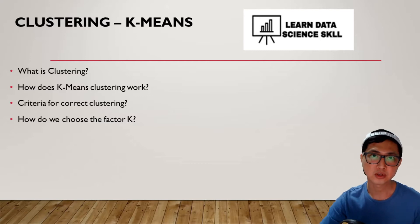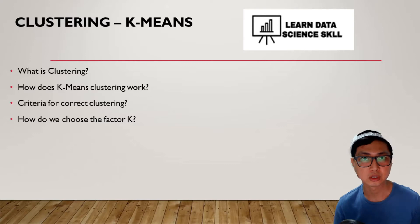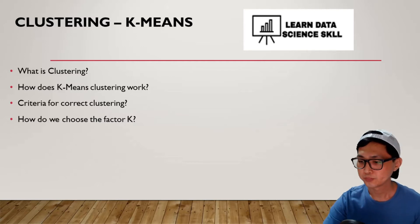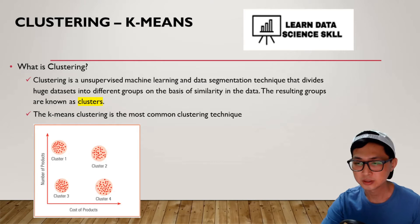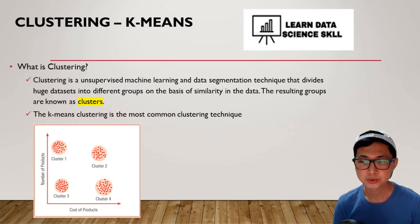Don't confuse the k here with the k introduced in k-nearest neighbor — even though they both use the k letter, they are referring to something different. Feel free to check out my last video for k-nearest neighbor. In this video, I'm going to explain what k is referring to here. Clustering is mainly used for data segmentation that divides a huge dataset into different groups on the basis of similarity in the data, and the resulting groups are known as clusters.